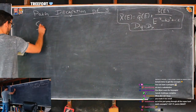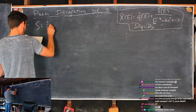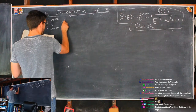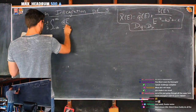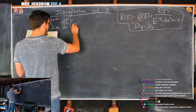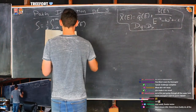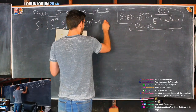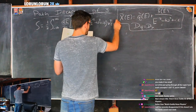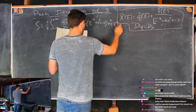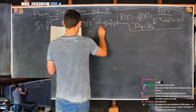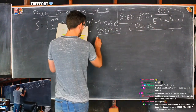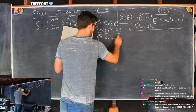Why does all this matter? Let's rewrite the action. After the U-substitution, we've done the Fourier transform, we've done U-substitution, we've introduced functional derivatives, we've added source terms — now we're going to take those functional derivatives.